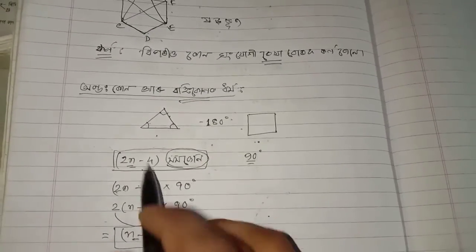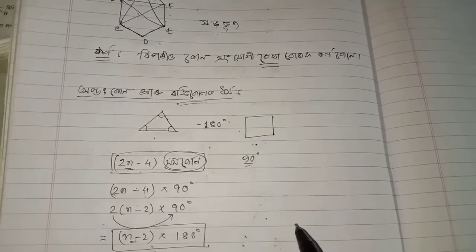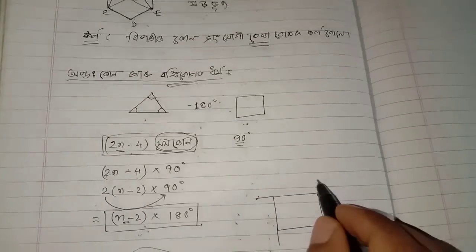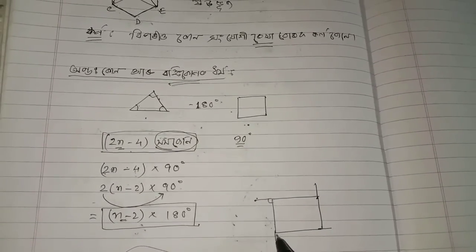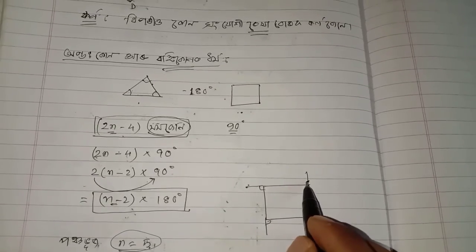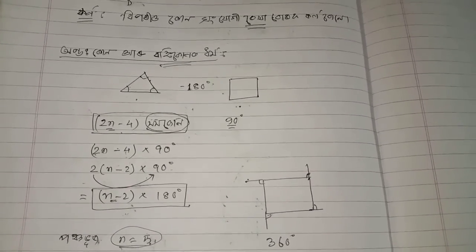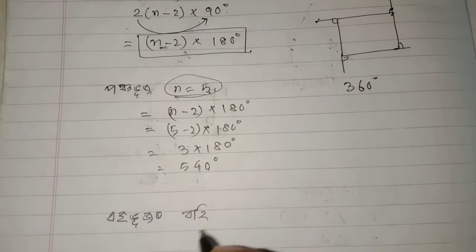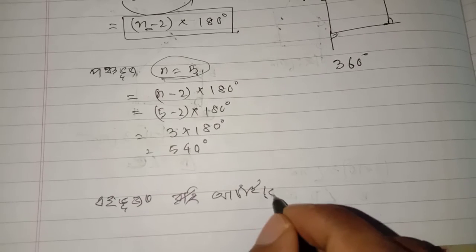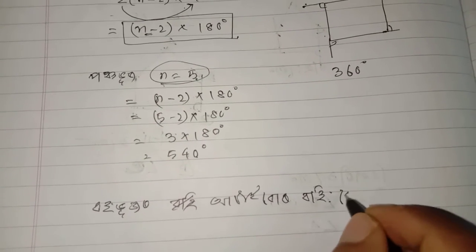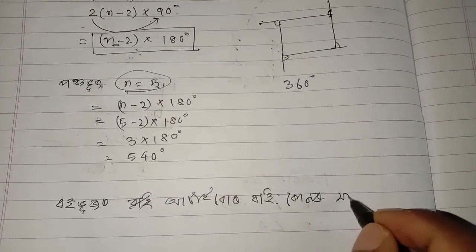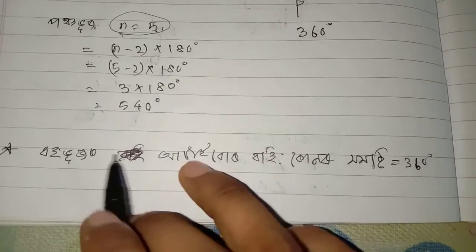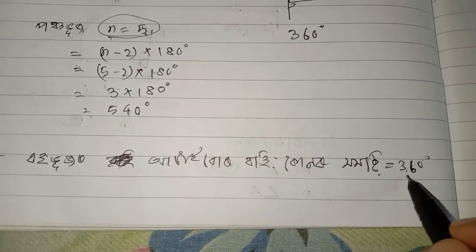We also know that the sum of all exterior angles of any polygon is always 360 degrees. This is an important result: regardless of the number of sides, the sum of all exterior angles of a polygon equals 360 degrees.